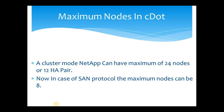I have already made a video on NetApp architecture where I explained what an HA pair is and how it is added to a cluster. I will put a link in the description, or you can click the i button to go to that video to understand NetApp architecture. That's all for this video. Hope you understood the difference between cluster mode and 7 mode NetApp. If you have any questions, put them in the comment section and I will try to answer.